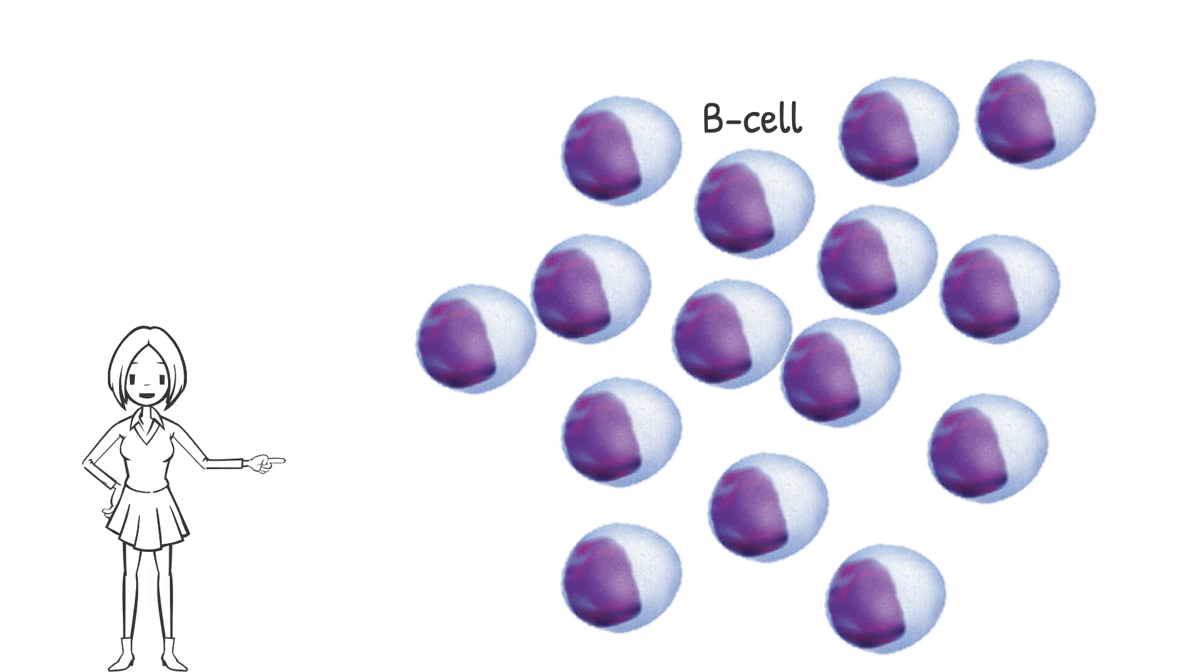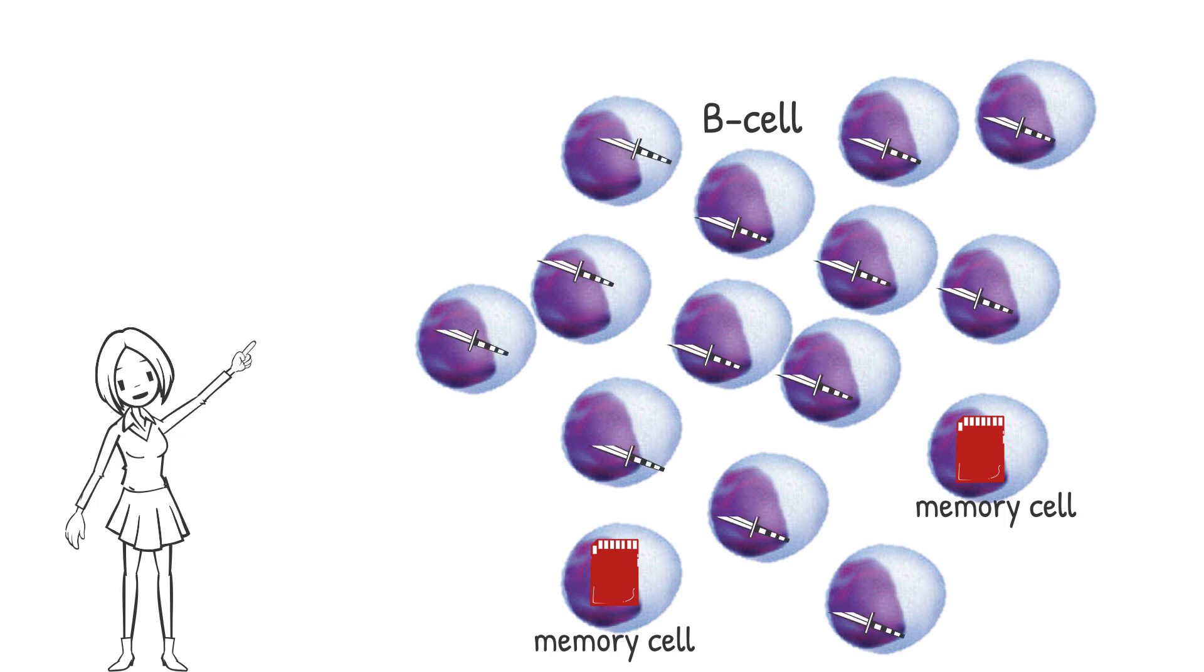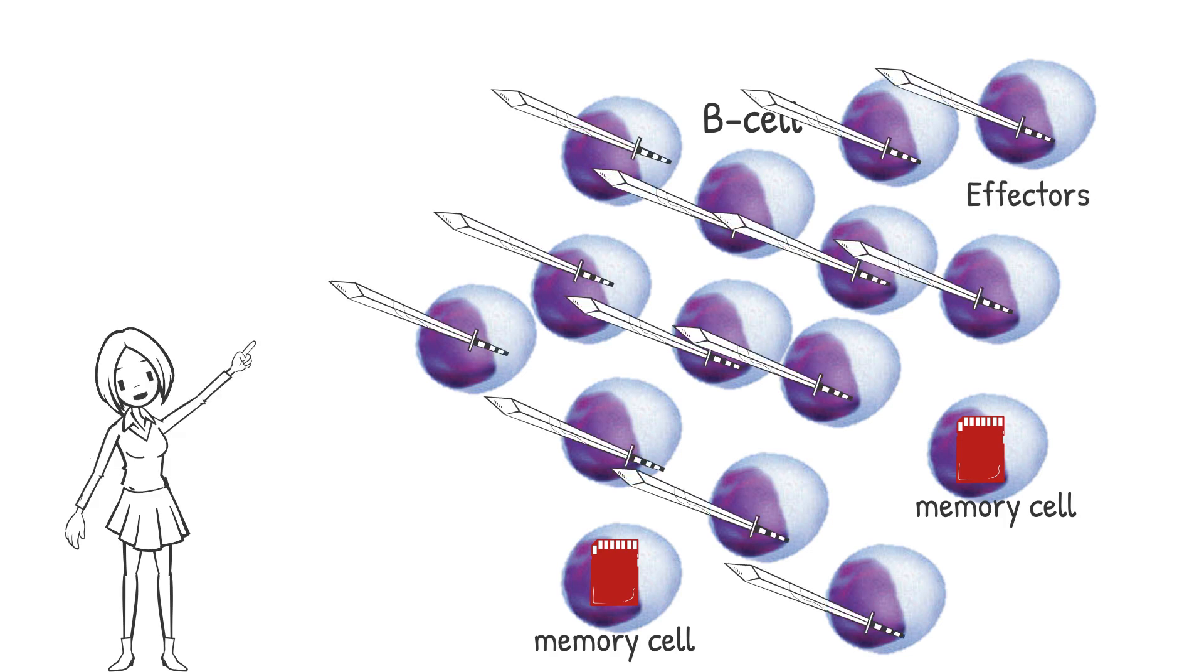Some of the clones will change to memory cells. They keep the genetic information of antigen. The majority will become effectors and produce antibodies all over the body to kill the invader. They live 4 to 5 days.